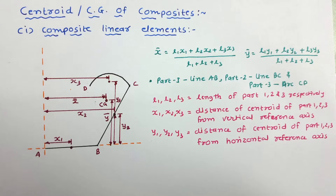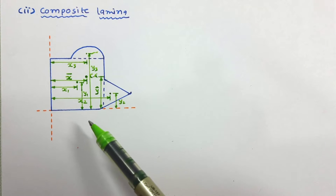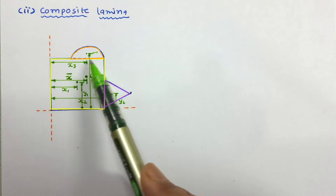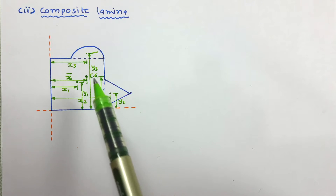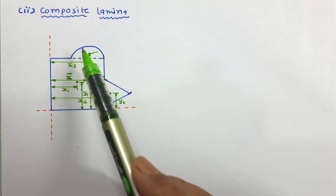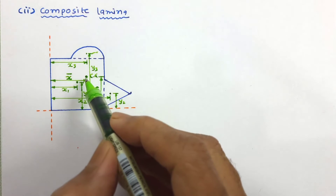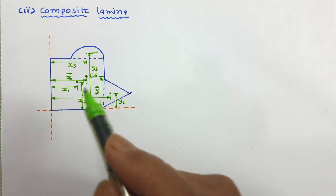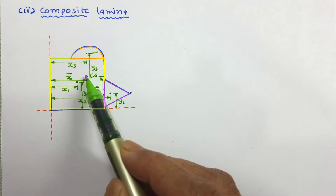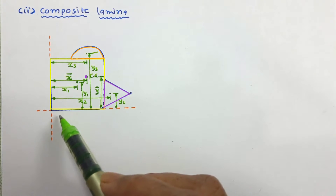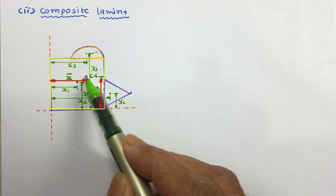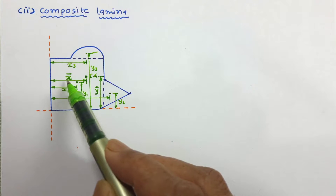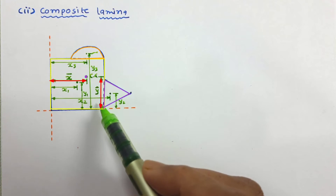Let us now see the composite lamina. In this figure, a composite lamina is shown which is made up of three parts: a square, a triangle, and a semicircle. These two are the reference axes, and we are interested to locate the centroid of this composite lamina.